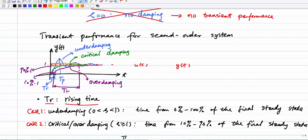For underdamping, the rise time is defined as the time from 0% to 100% of the final steady state. Since the final steady state is one (for a unit step input), the rise time tr is the time from when the response starts until it first reaches one. The blue line (underdamping) goes up, oscillates, and reaches steady state at one.